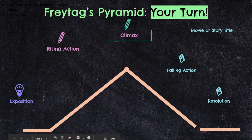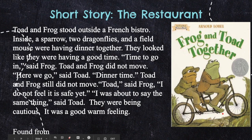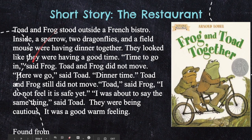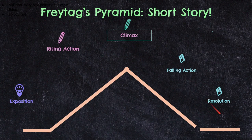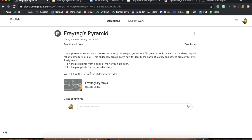Your homework is to practice this with a movie or story you've seen or read — it doesn't have to be super long, just a sentence for each plot point. Then you're also going to read a short story — literally just a small paragraph — and do the same thing. If you remember reading 'Frog and Toad' when you were younger, it's based off of that. You'll look at the assignment in the slideshow, make a copy of it, fill in those two slides, and then turn that in.